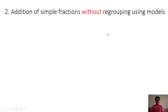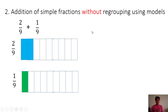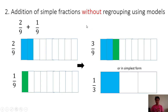We have the next example: addition of simple fractions without regrouping using models. 2/9 plus 1/9. We have 2/9 and we have 1/9. Combine the shaded parts — we have 3 shaded parts out of 9, which is 3/9. And since we can reduce this into lowest terms, the simplest form of 3/9 is equal to 1/3. Therefore, 2/9 plus 1/9 is equal to 1/3.